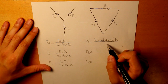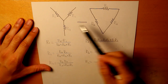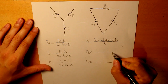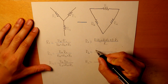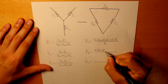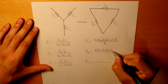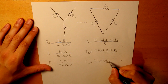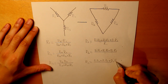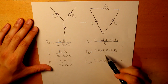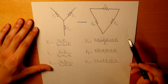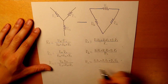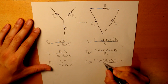The denominator is just the equivalent Y value. For RA, the denominator is R1. For RB, the numerator is the same and the denominator is R2. For RC, the denominator is R3. That is how Y-delta transformation works.